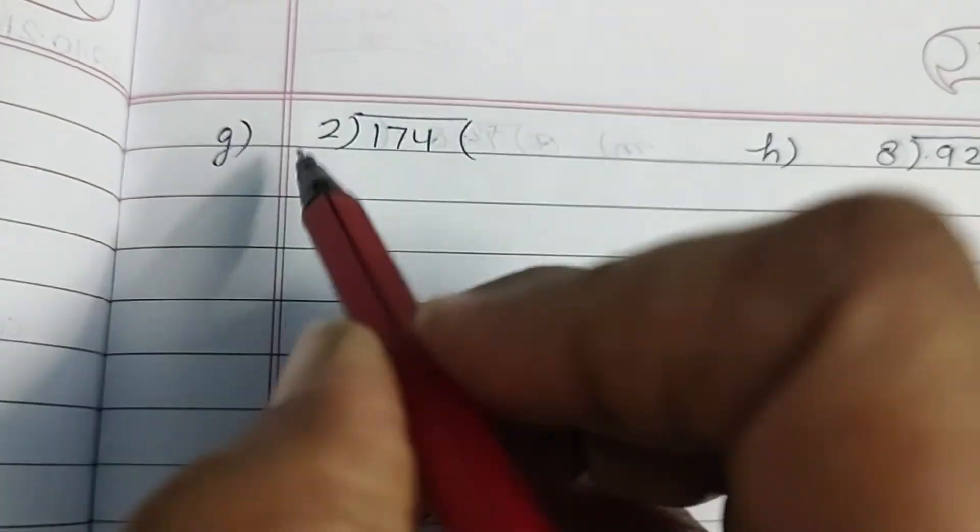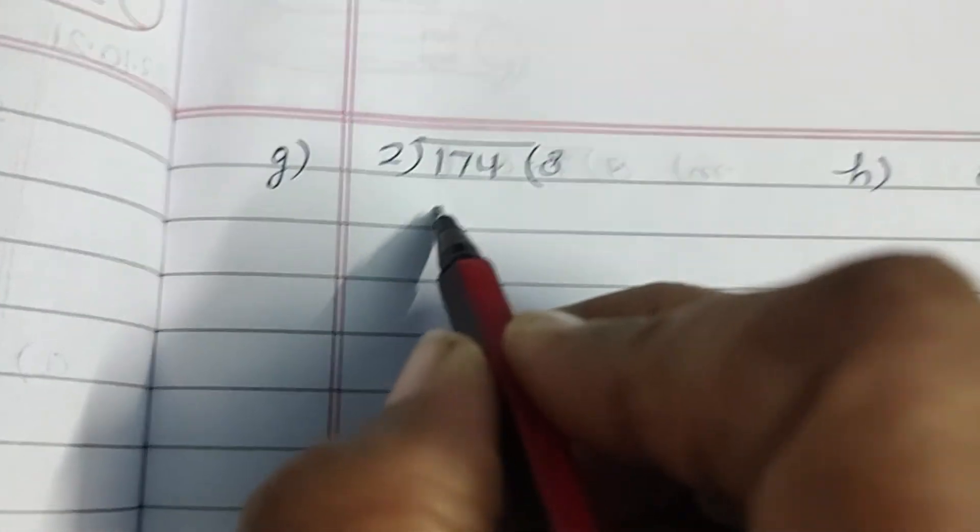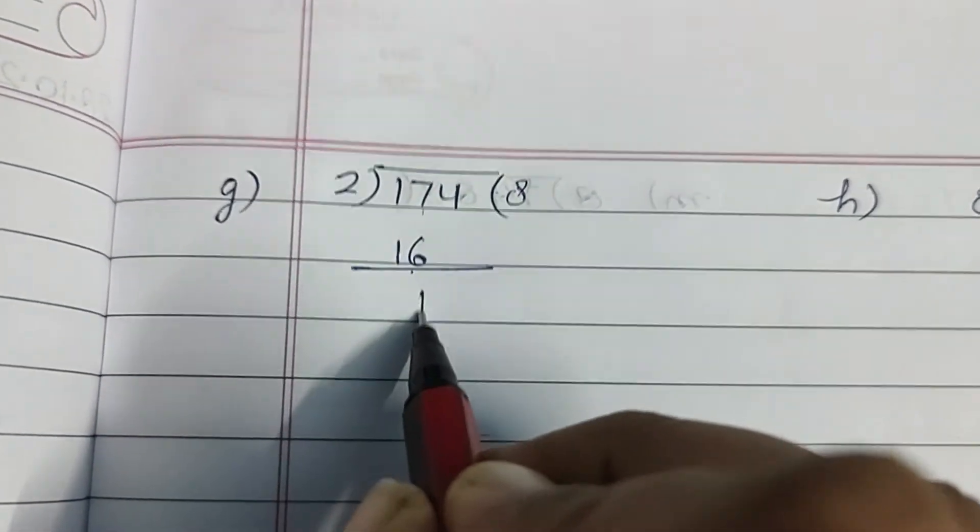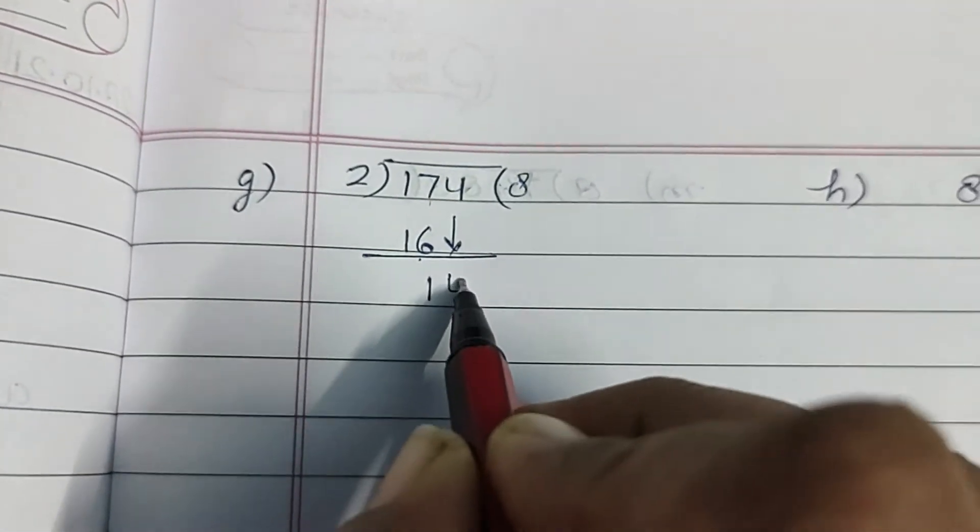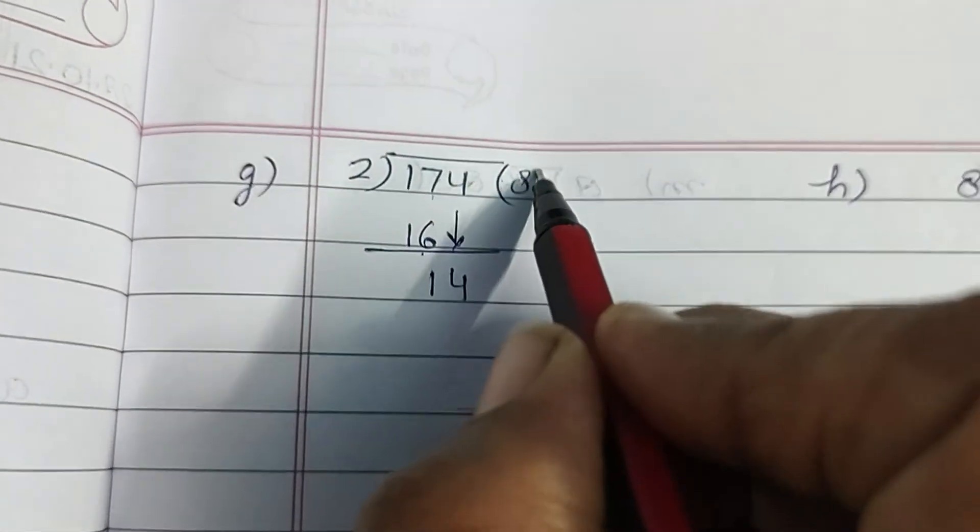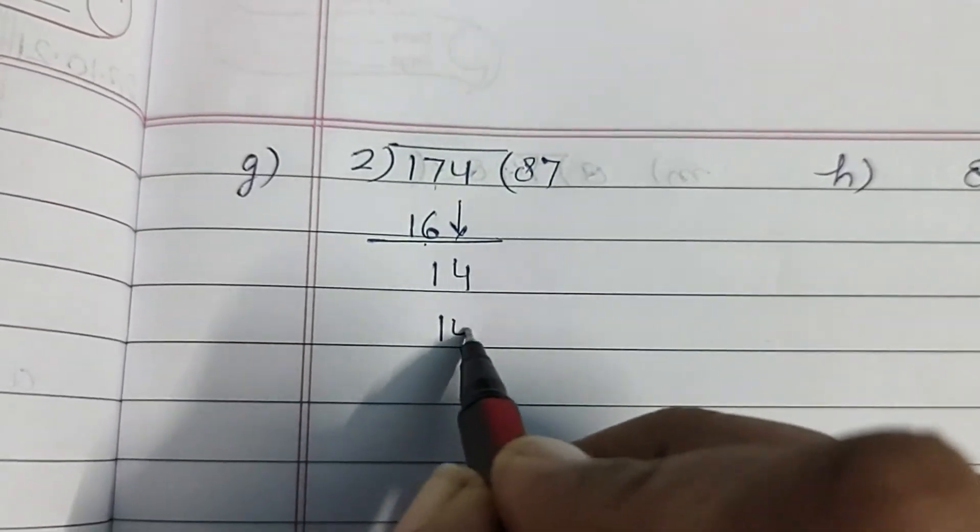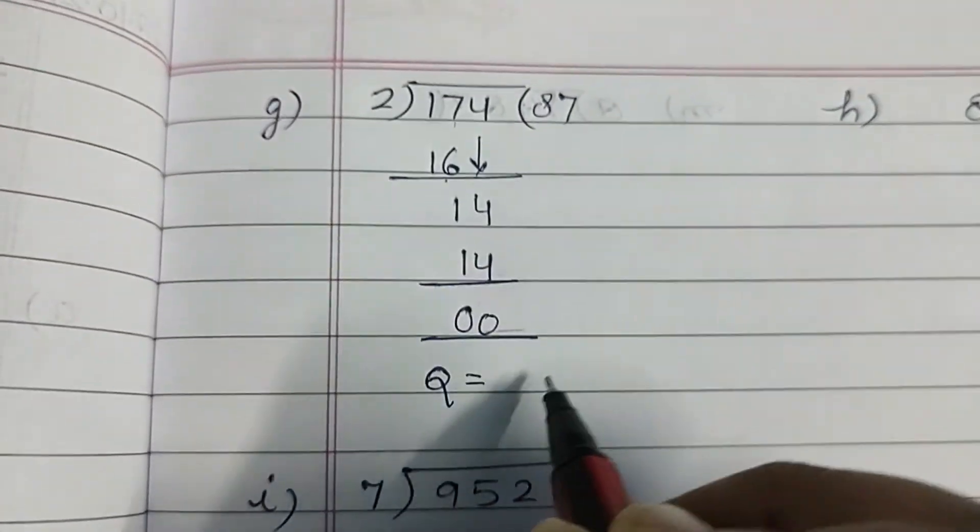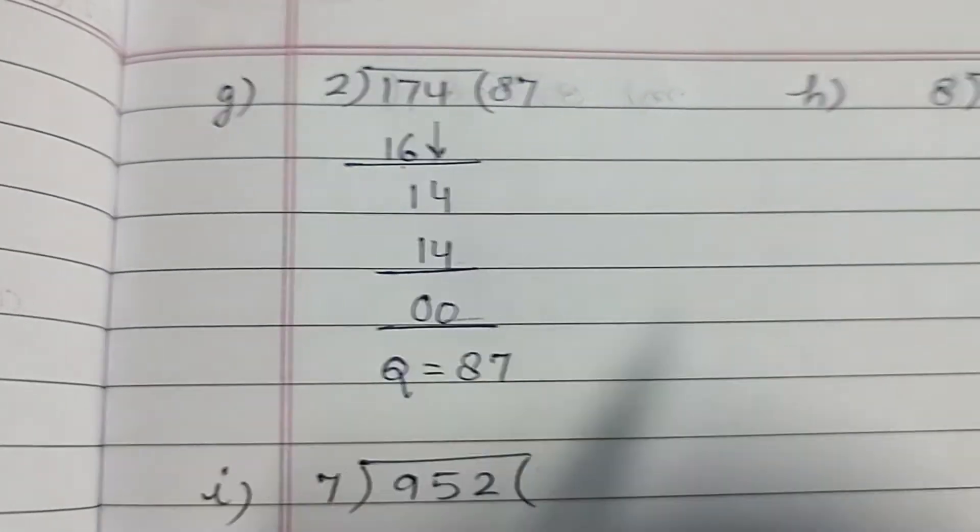Now 2×8, 16. 17 minus 16, 1. Bring 4 down, 14. 2×7, 14. 14 minus 14, 0. Quotient is equal to 87.